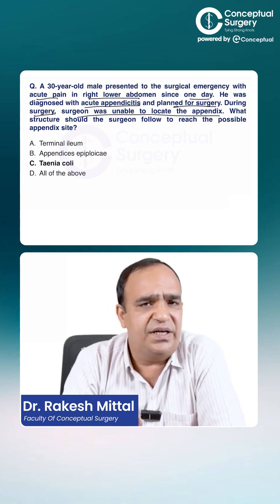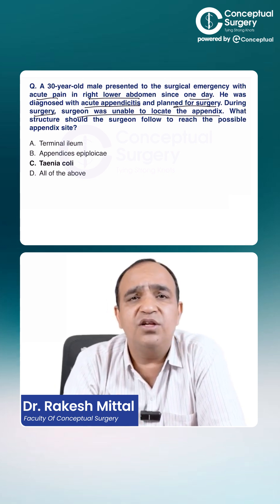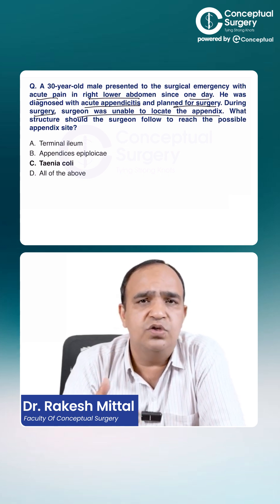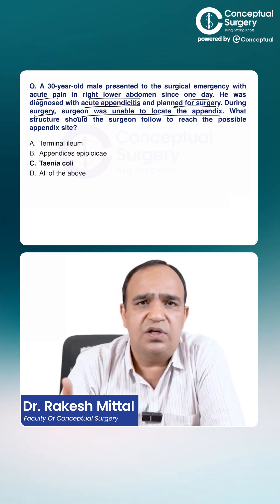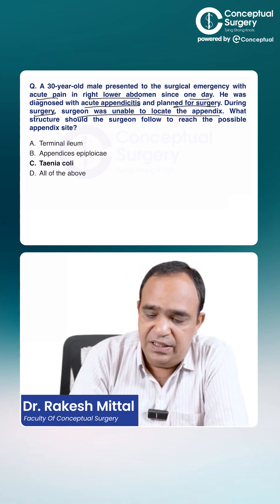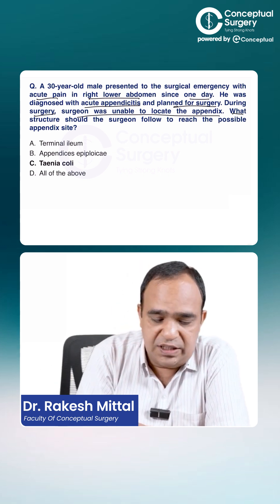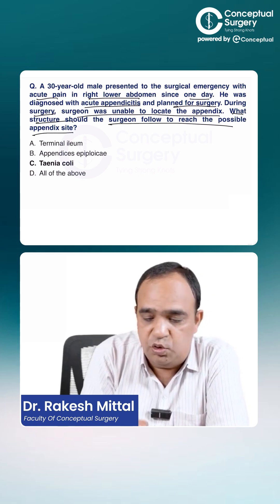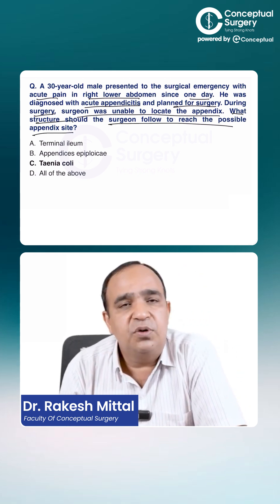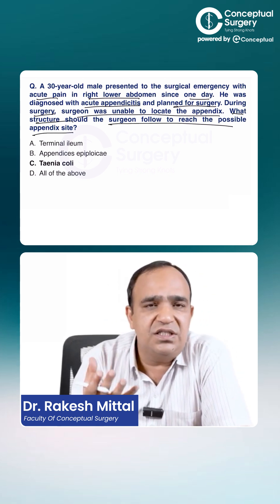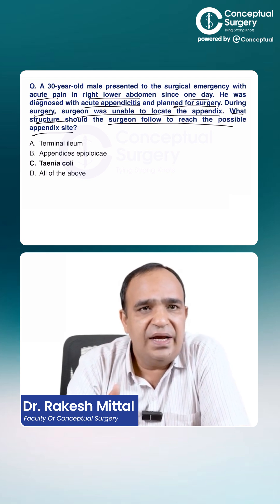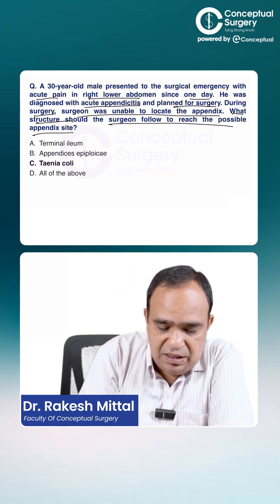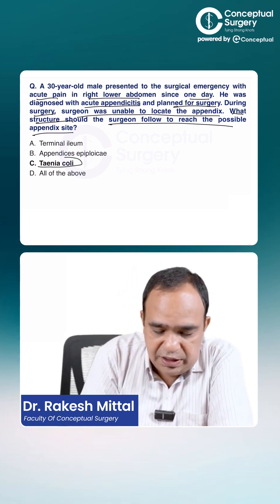When you can't find the appendix, you have to look for clues and use your experience. What structure should the surgeon follow to reach it? The first step is to mobilize the cecum and then identify the teniae coli — this is the single most important landmark.